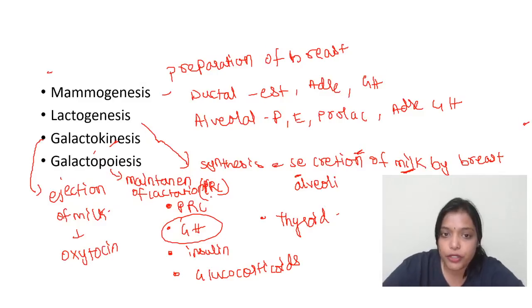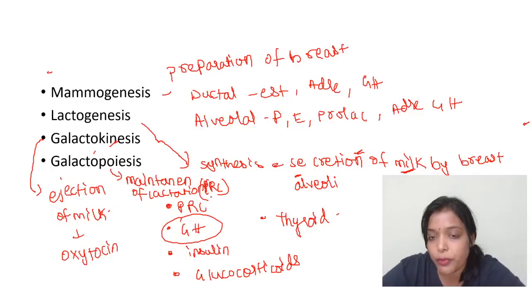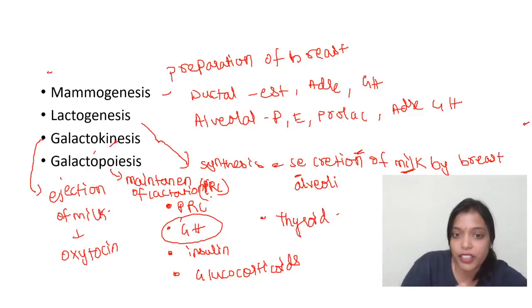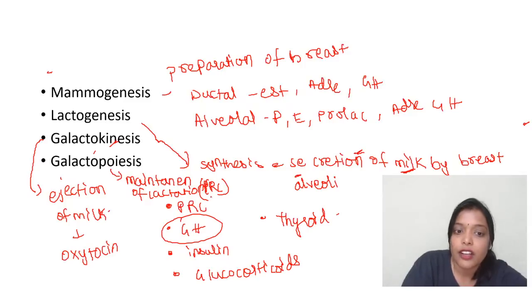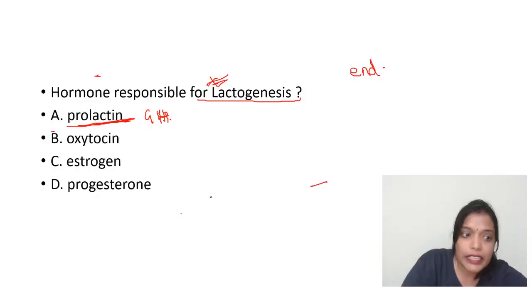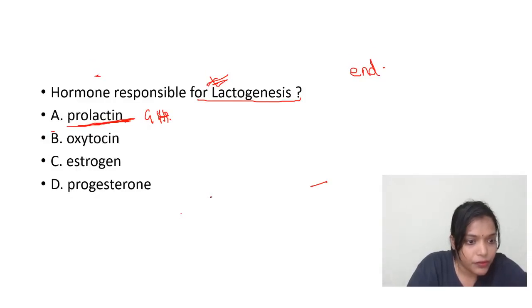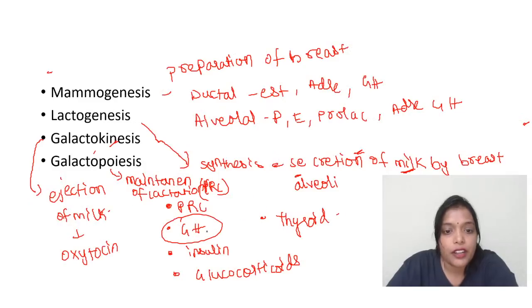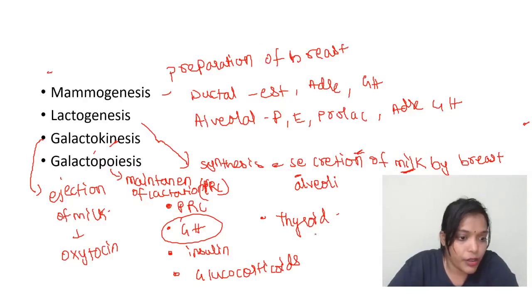To summarize: mammogenesis is preparation of the breast — ductal growth by estrogen, adrenal, and growth hormone; alveolar growth by estrogen, progesterone, prolactin, adrenal, and growth hormone. Lactogenesis — synthesis and secretion by breast alveoli — is by prolactin, growth hormone, insulin, glucocorticoids, and thyroid. Since there was no option of prolactin in the exam, the answer for lactogenesis was growth hormone.